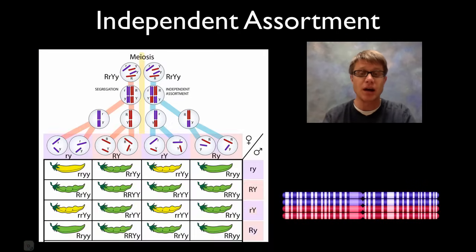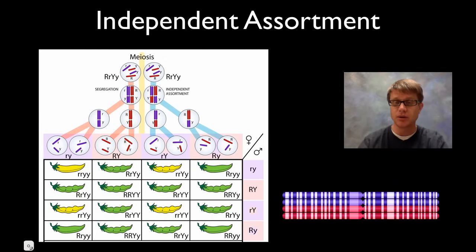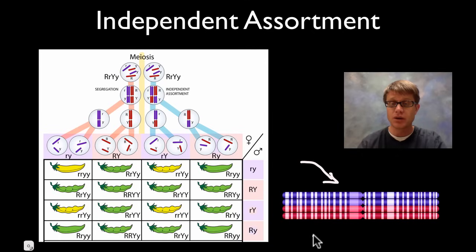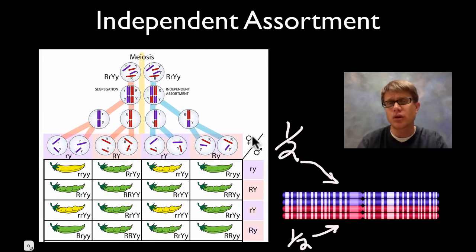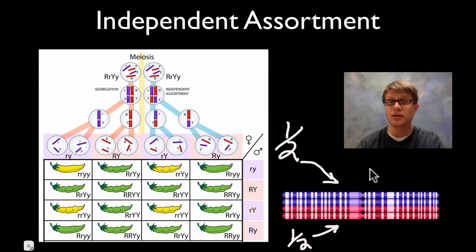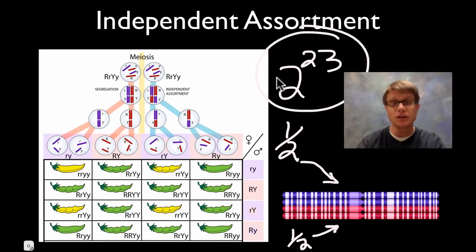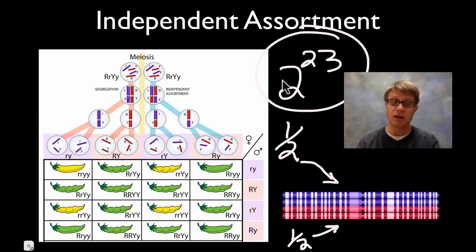The first process is independent assortment. When chromosomes line up, they could have the blue on top or the blue on the bottom — the odds are 1 in 2 either way. That might not seem like much variability, but remember we have 23 chromosomes. The possibilities through independent assortment are 2 to the 23rd power — that gives us billions of possibilities just from each chromosome assorting independently.